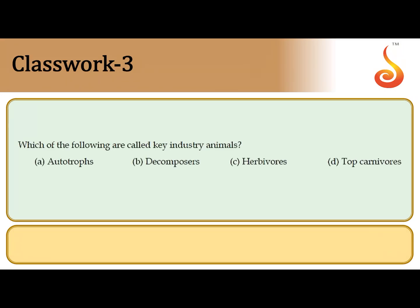The third question says: which of the following are called the key industry animals? Within the food chain, one trophic level is referred to as the key industry animals. These are the animals which convert the energy stored in plant biomass into energy stored in animal biomass. These animals are herbivores, which occupy the second trophic level just above the producers. They obtain energy from producers in the form of plant organic matter and conserve it as secondary productivity, that is flesh. Herbivores are also referred to as primary consumers and the key industry animals.